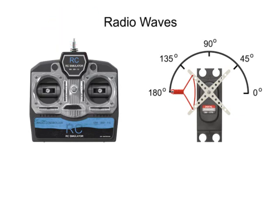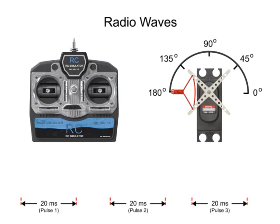The servo expects to receive a converted digital pulse roughly every 20 milliseconds. This train of pulses instructs the servo motor to hold its position. It is the pulse duration repeating at regular intervals that tells the servo where to turn.